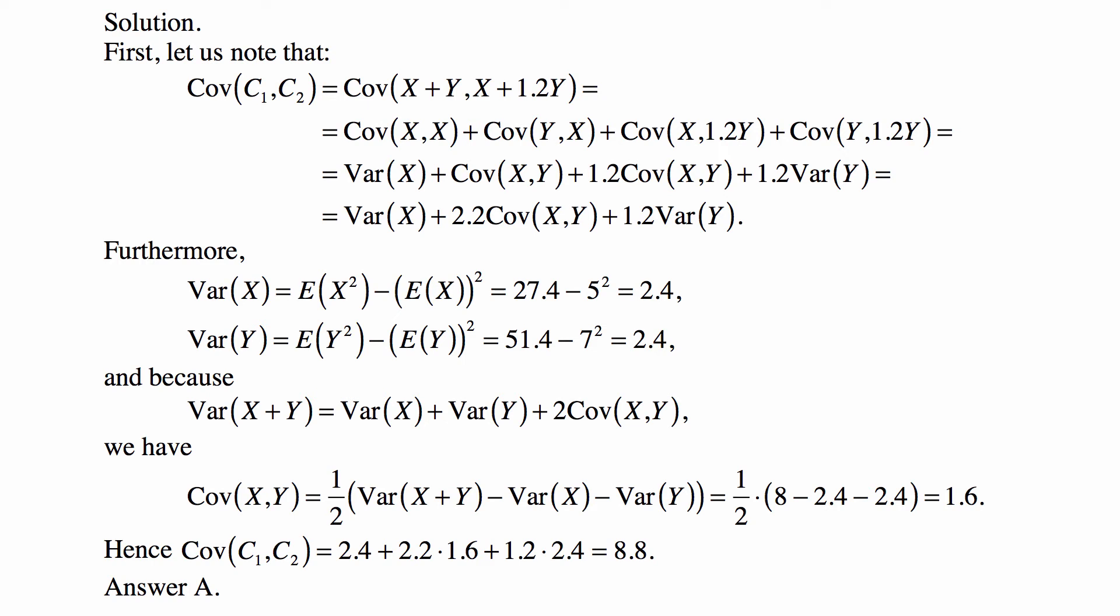Now covariance of X and X is the variance of X. Covariance of Y, X is the same as covariance of X, Y. And then covariance is a linear operator in the second of its variable, second argument. So covariance of X and 1.2Y is 1.2 Cov(X, Y), and covariance of Y and 1.2Y is 1.2 times the variance of Y, because it's 1.2 times covariance of Y with Y.